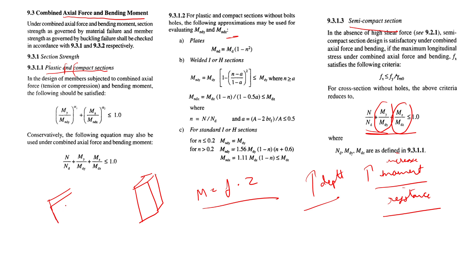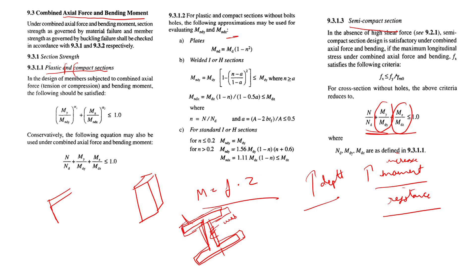Web thickness is also very important when it comes to shear capacity. For an I-section, there are two flanges and one web. The web thickness matters a lot for moment resistance — when there is a shear failure, increase the web thickness; when there is a moment failure, increase the flange thickness. Choose a deeper or heavier section to resist axial force and bending moment.